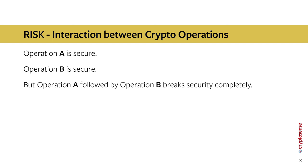The third risk is the interaction between cryptographic operations. We often see that one cryptographic operation is individually secure, and a second operation is also individually secure, but if the same system executes both, there is a complete loss of security. The system is allowed to execute operation A and operation B separately — it's the attacker who chains them. The security review only ever considered the two operations in isolation and missed the combined vulnerability.